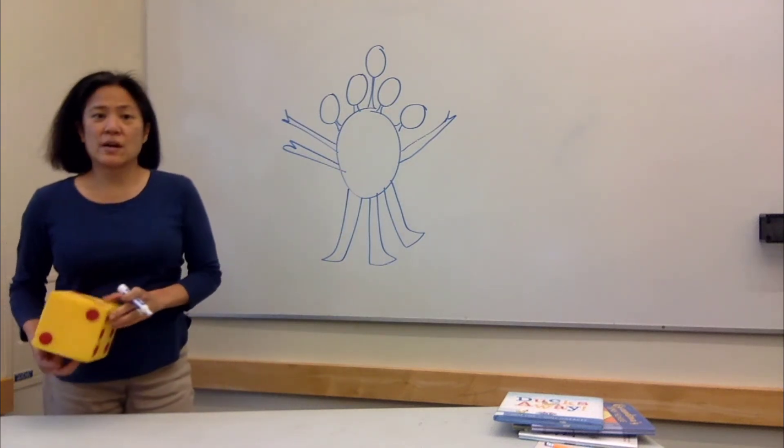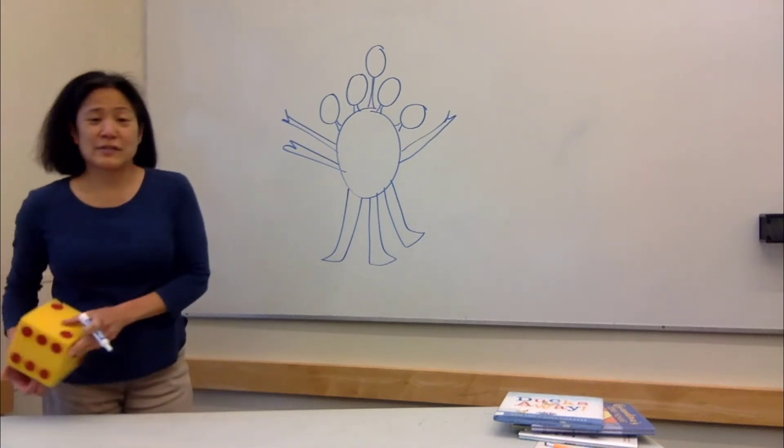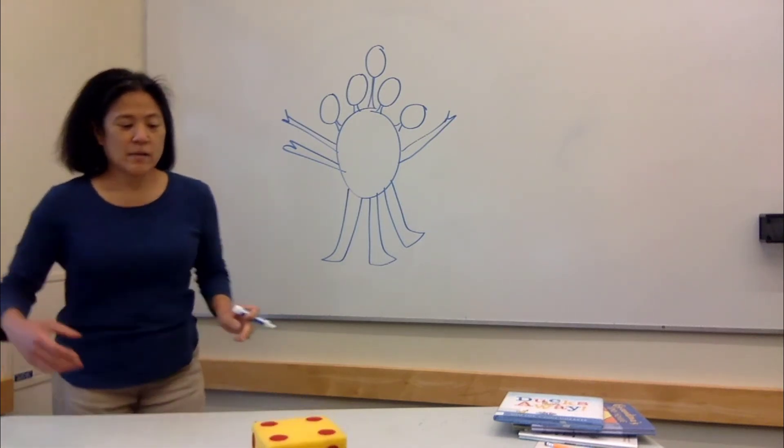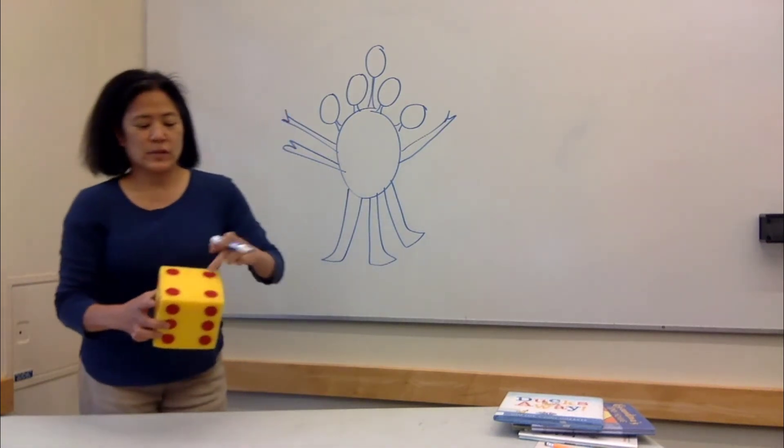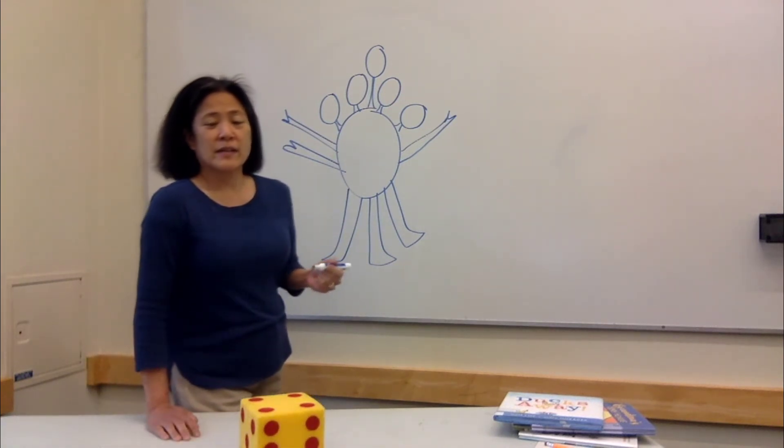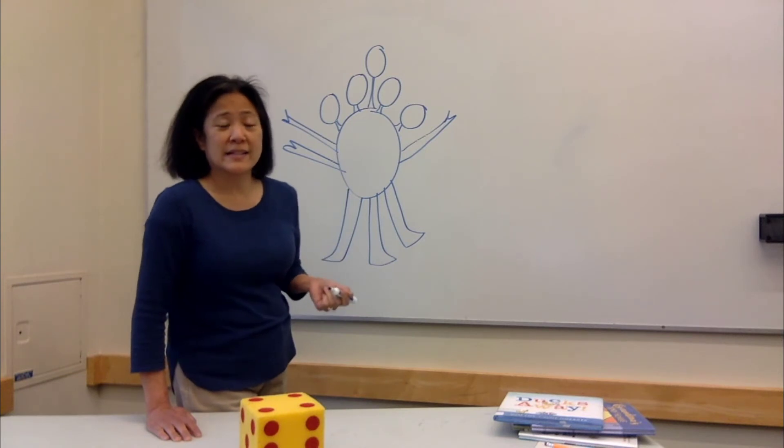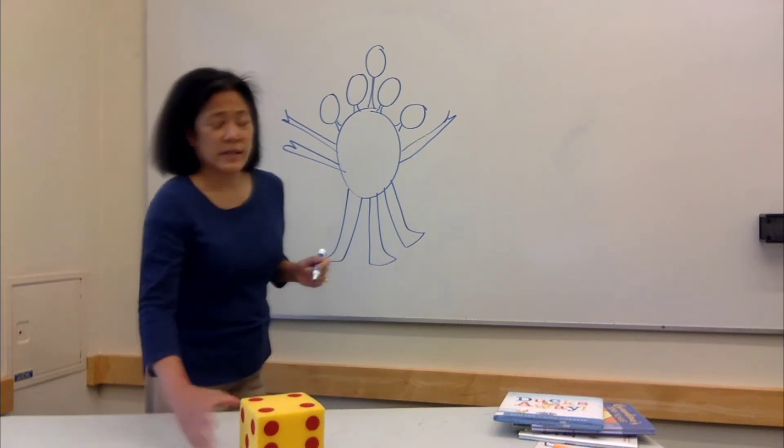And how about some eyes? Let's put some eyes on our crazy critter. Four eyes. One, two, three, four. And don't forget also when you're counting to use ordinal numbers, which is first, second, third, fourth, fifth, sixth. That's math vocabulary that kids need to be familiar with too when they start kindergarten.